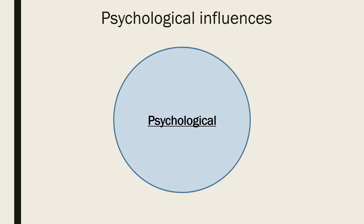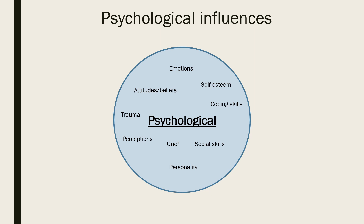The psychological component of the biopsychosocial model seeks to find a psychological foundation for a particular symptom or array of symptoms. There are a wide range of possible psychological influences. Some of the main ones include the individual's personality, perceptions, self-esteem, attitudes and beliefs. Emotions such as irritability and overwhelming sadness could also play a role. Other examples of psychological influences include coping skills, social skills, grief and trauma.